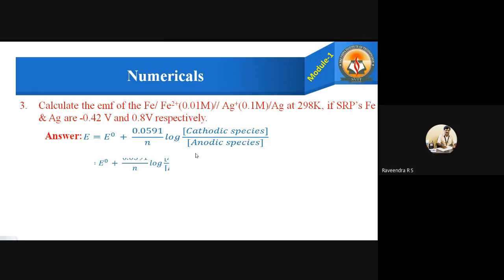First, we identify cathode and anode. Iron is the anodic species — iron gets oxidized. Silver is the cathodic species — it is the reducing species. So in the formula: E = E⁰ + (0.0591 / N) × log([Ag⁺]² / [Fe²⁺]).